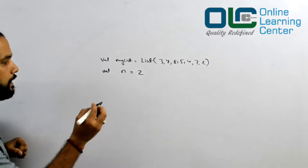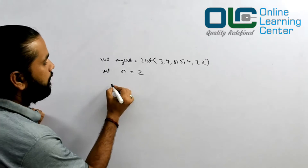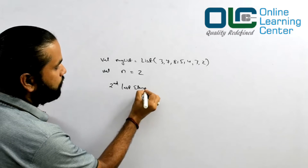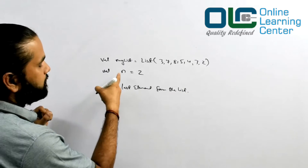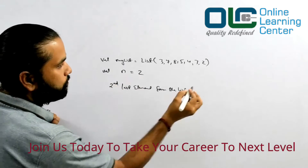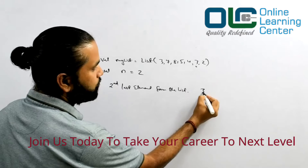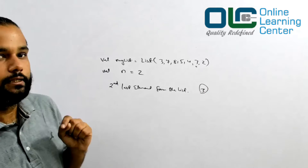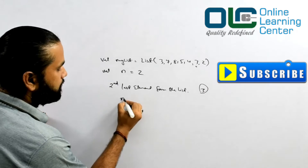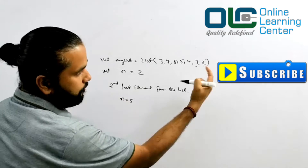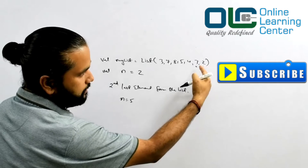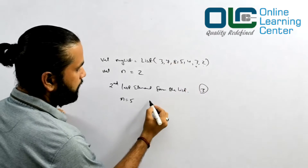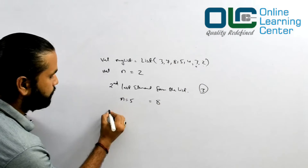For example, if n equals two, then find out the second last element from the list. So if n equals two, the output will be three, because three is the second last element in this entire list. Similarly, if n equals five, then counting: first, second, third, fourth, fifth — so it's eight.